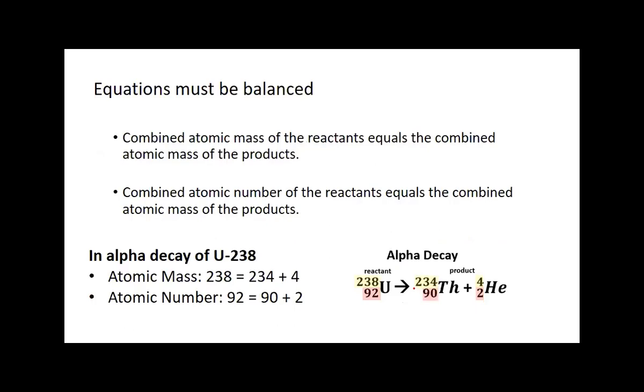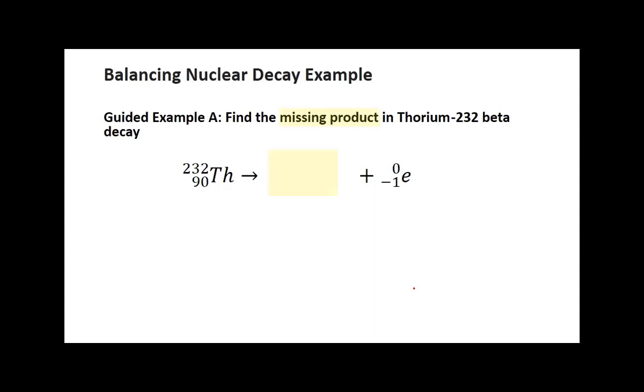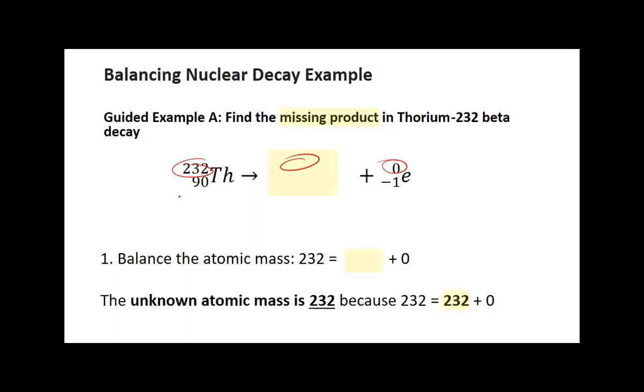Let's do a couple examples, and we're going to balance these things off. You do need a periodic table for these. Let's go ahead and start on this one. Make sure you're focused with me. Let's take a look at the atomic mass first. What atomic mass is missing that can add to zero that makes it 232? What plus zero equals 232? It's going to be 232.